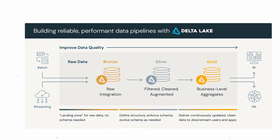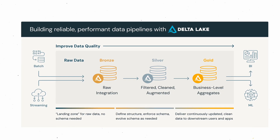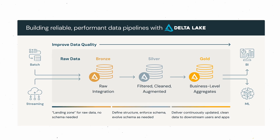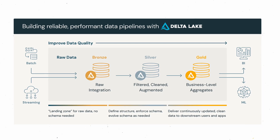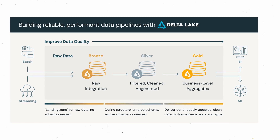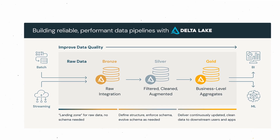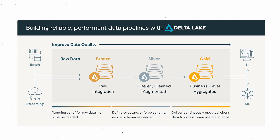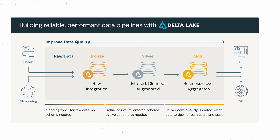The medallion architecture is a term coined by Databricks. It's a data design pattern used to organize data logically, with the goal of incrementally and progressively improving the structure and quality of data as it flows through the bronze, silver, and gold layers. The bronze layer is the raw layer, the silver layer is the validated or clean layer, and the gold is the enriched or analytics layer. Each layer has a specific role, progressively refining and improving data quality.